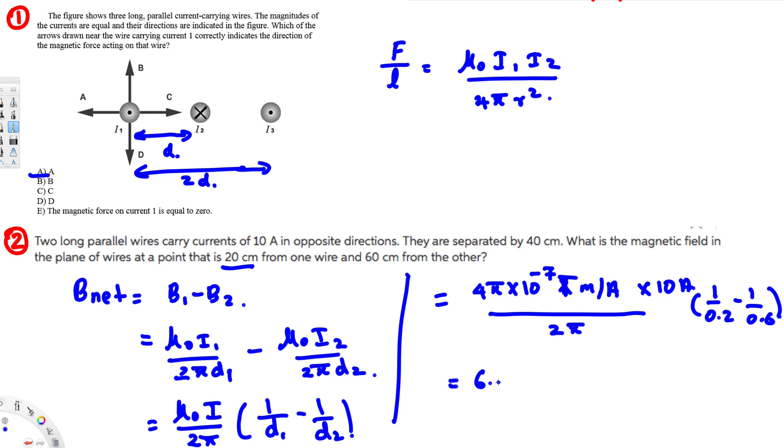Now if you calculate this value, that should give you 6.67 times 10 to the power of minus 6 tesla, and that's going to be the final answer. I hope you guys find this video helpful, see you next time.